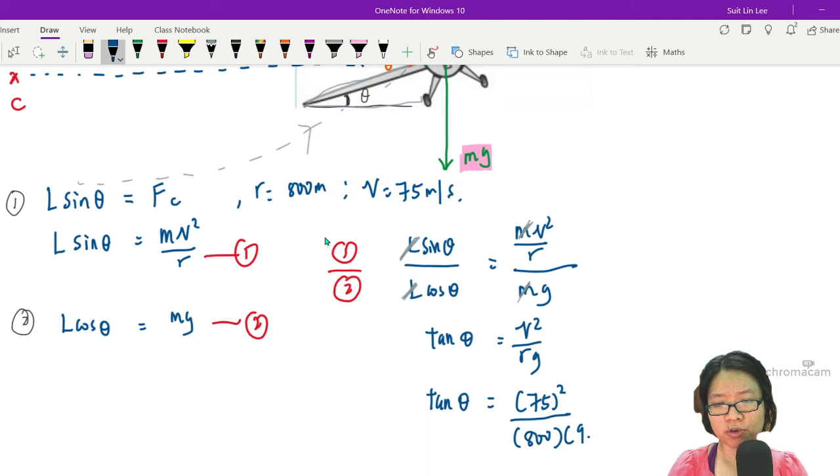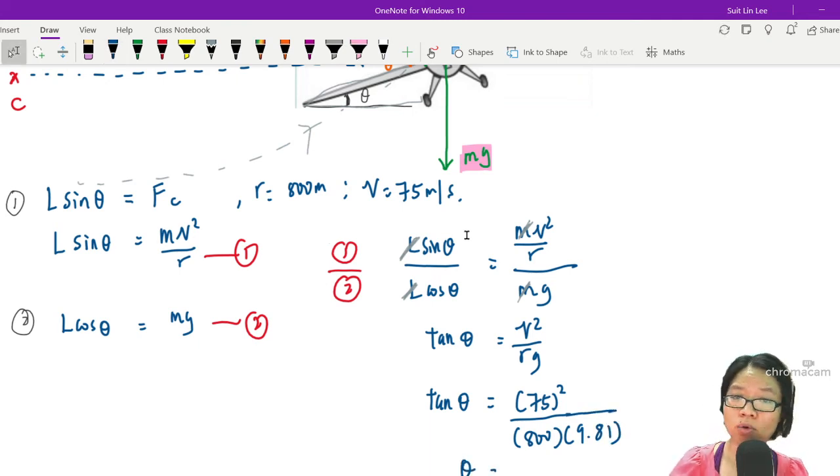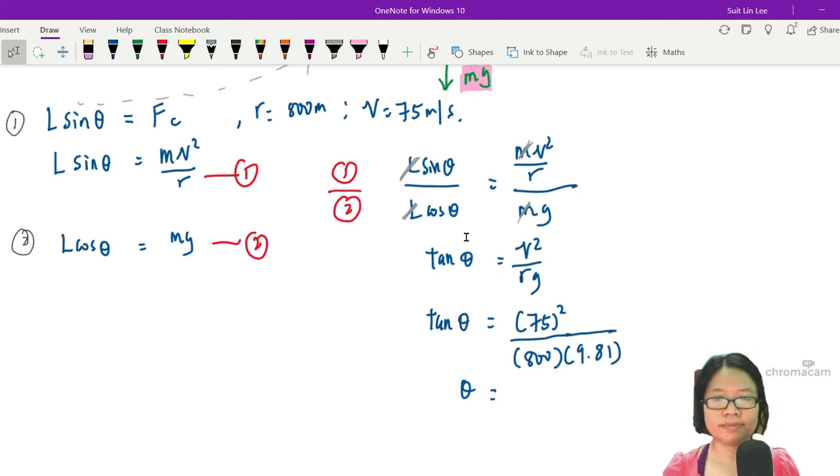Let me press my calculator: 800, 9.81. With a tangent inverse together, I get 35.6 degrees.